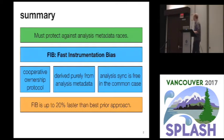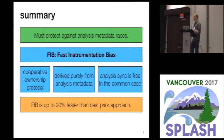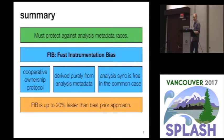In this work, we're targeting specifically dynamic data race detection for shared memory multithreading. We've designed a system called FIB — Fast Instrumentation Bias — which is a cooperative ownership protocol that derives a sense of ownership purely from the existing dynamic data race detector metadata, and uses that to provide analysis synchronization that guarantees safety basically for free in the common case.